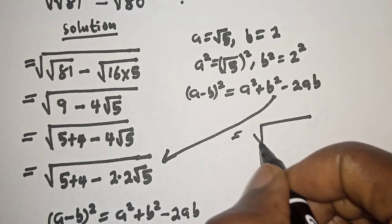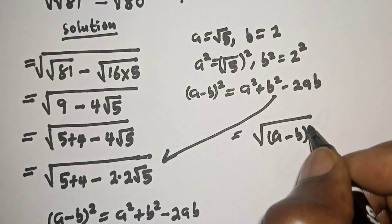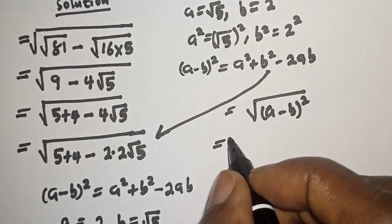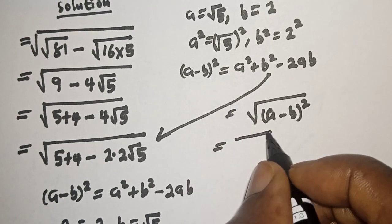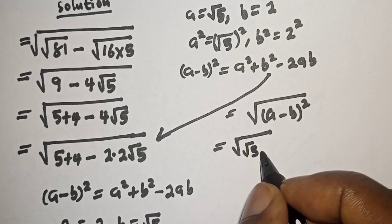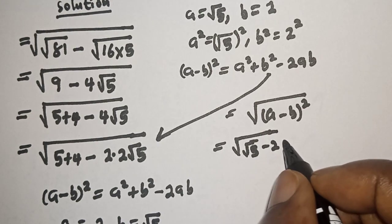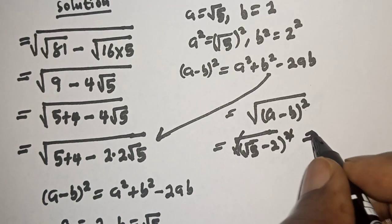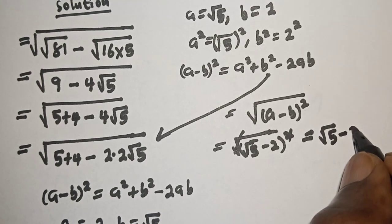Therefore we have square root of (a minus b) squared. Taking the square root cancels the square, giving us simply (a minus b), which is square root of 5 minus 2. So this simplifies to square root of (root 5 minus 2) squared, equal to root 5 minus 2.